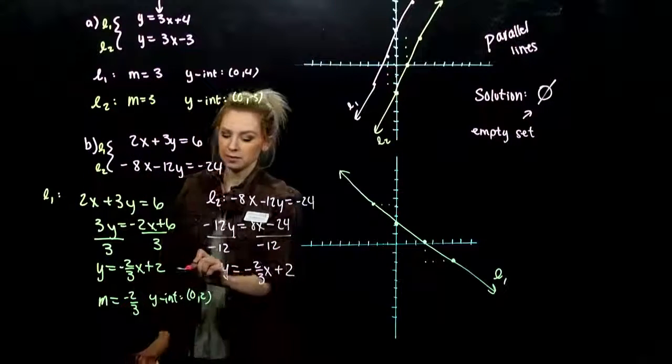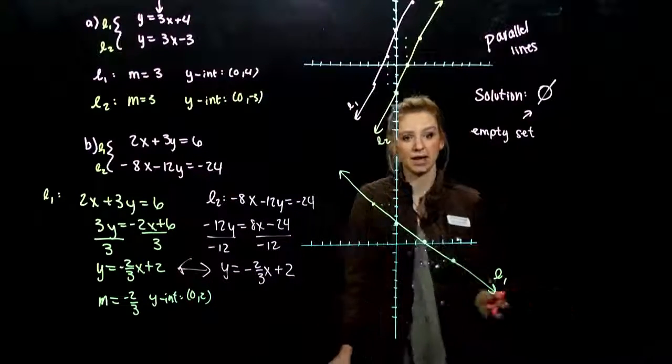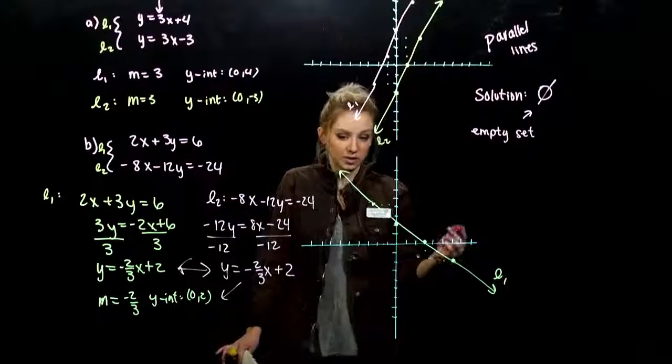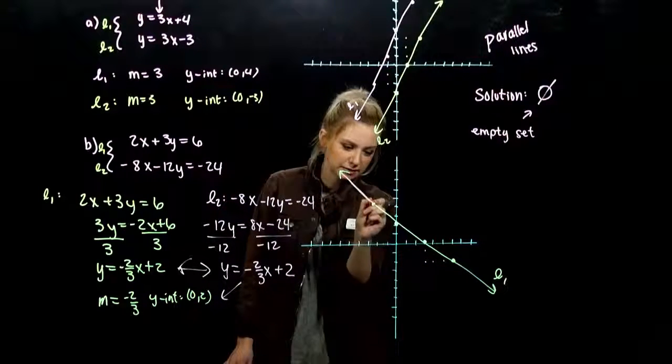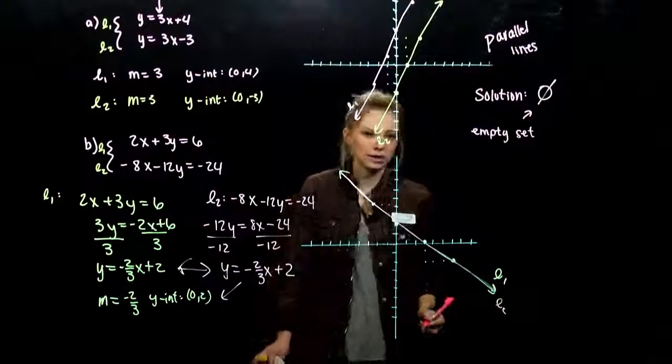So we're looking at negative 2 thirds x plus, because negative divided by negative gives us positive. 12 goes into 24 two times. So what do you notice about those two lines? They're exactly the same. They have the same slope and the same y-intercept. So if I'm going to graph it, it's going to lie right on top of this other one. So it's both line 1 and line 2.